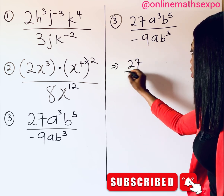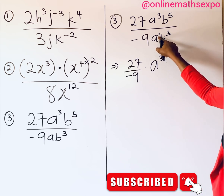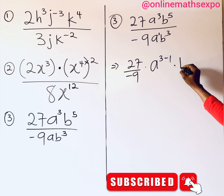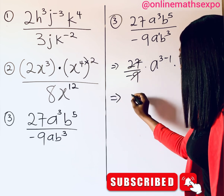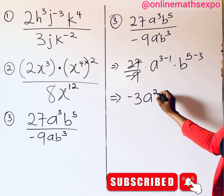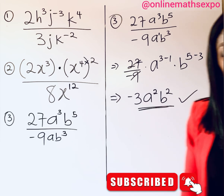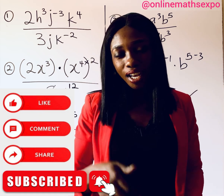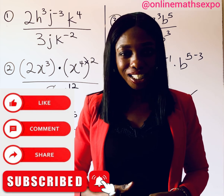Applying the division rule: 27 divided by negative 9 gives negative 3. For a: a to the power of 3 over a to the power of 1 gives a to the power of 3 minus 1, which is a squared. For b: b to the power of 5 over b to the power of 3 gives b to the power of 5 minus 3, which is b squared. So the final answer is negative 3a squared b squared. I hope you learned a lot — see you in the next class!